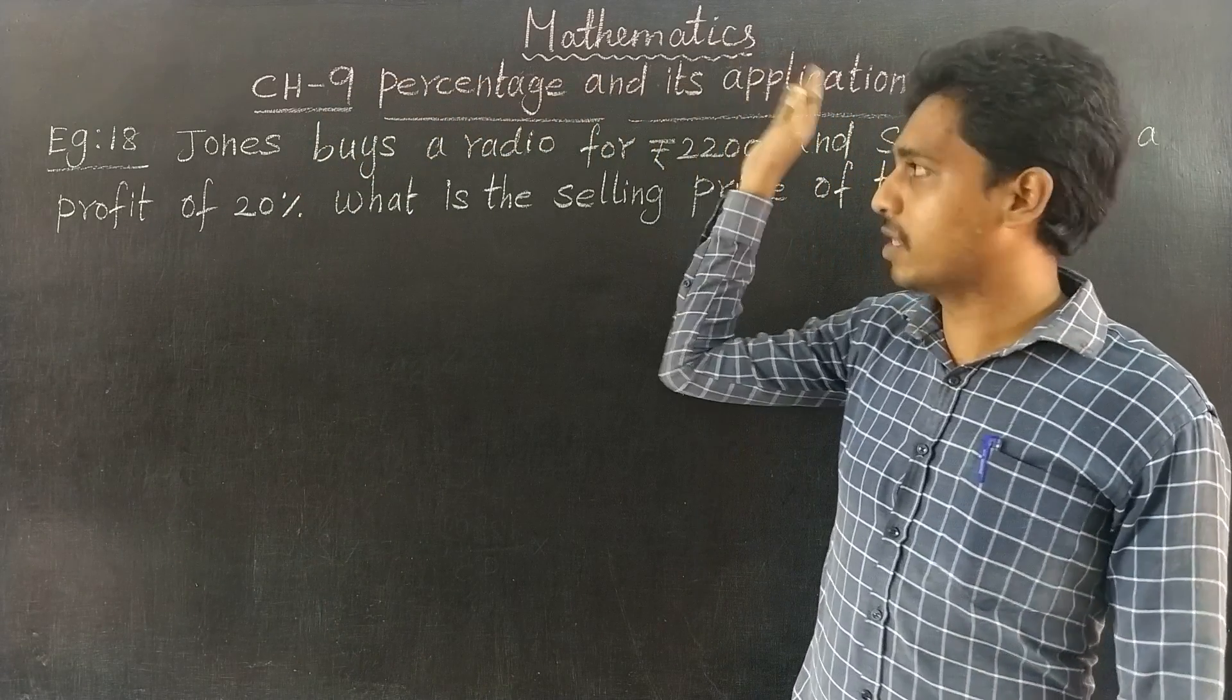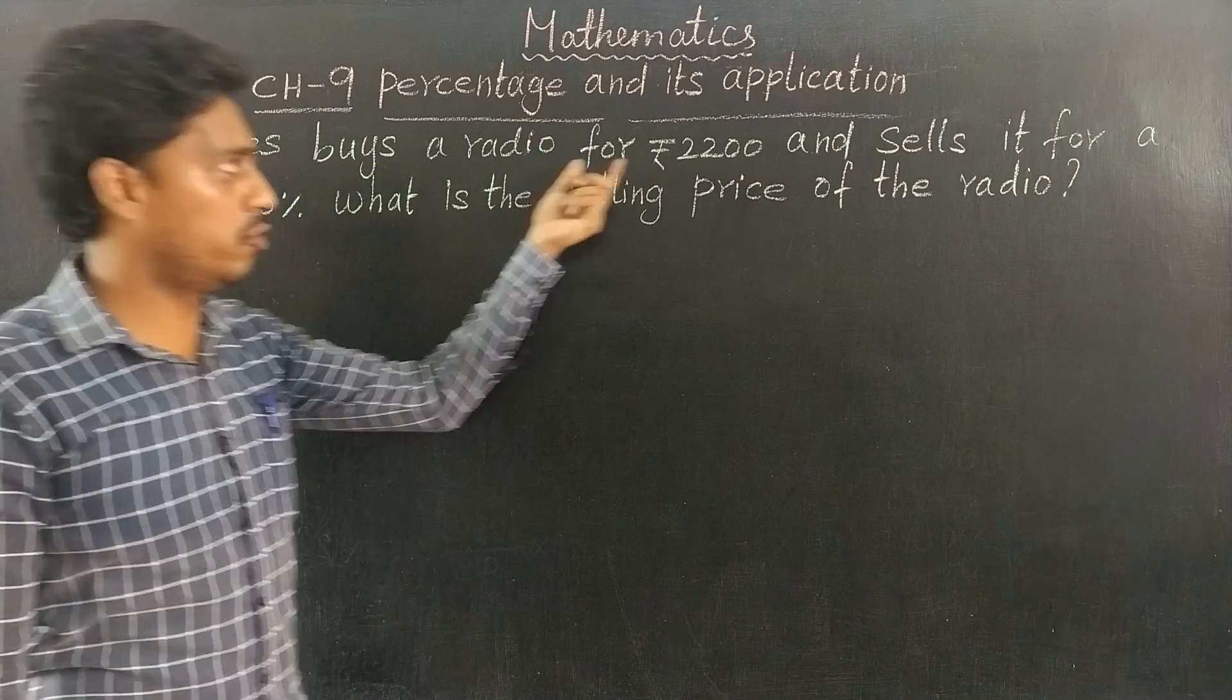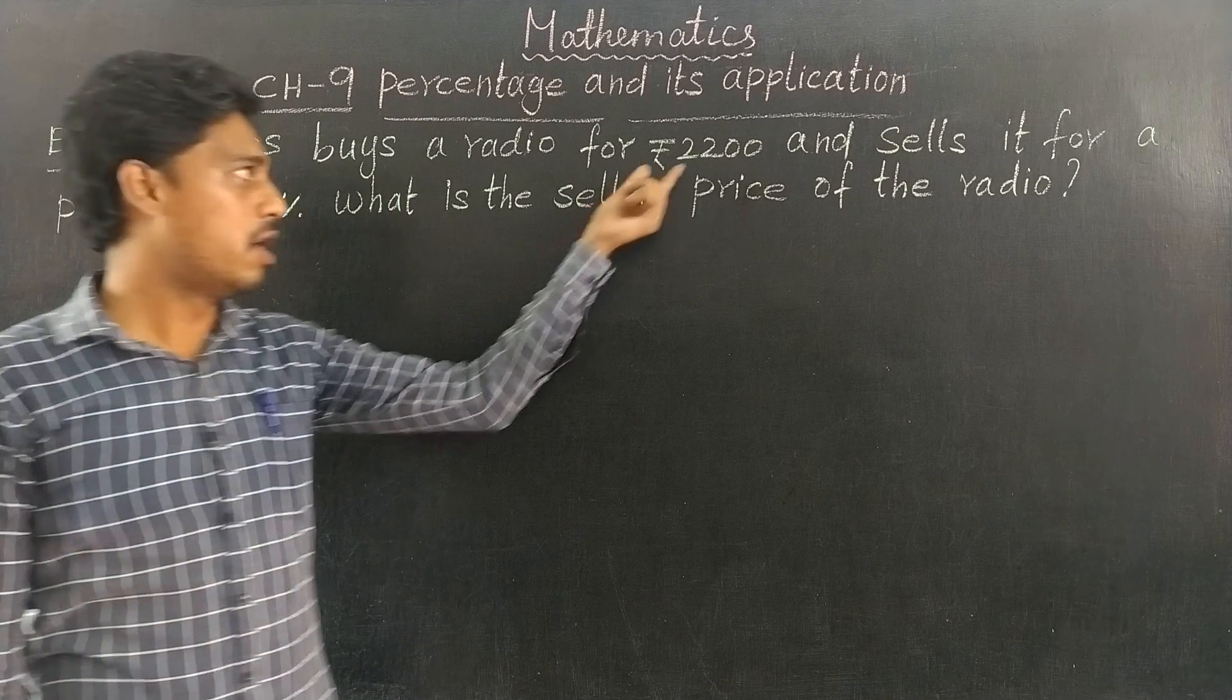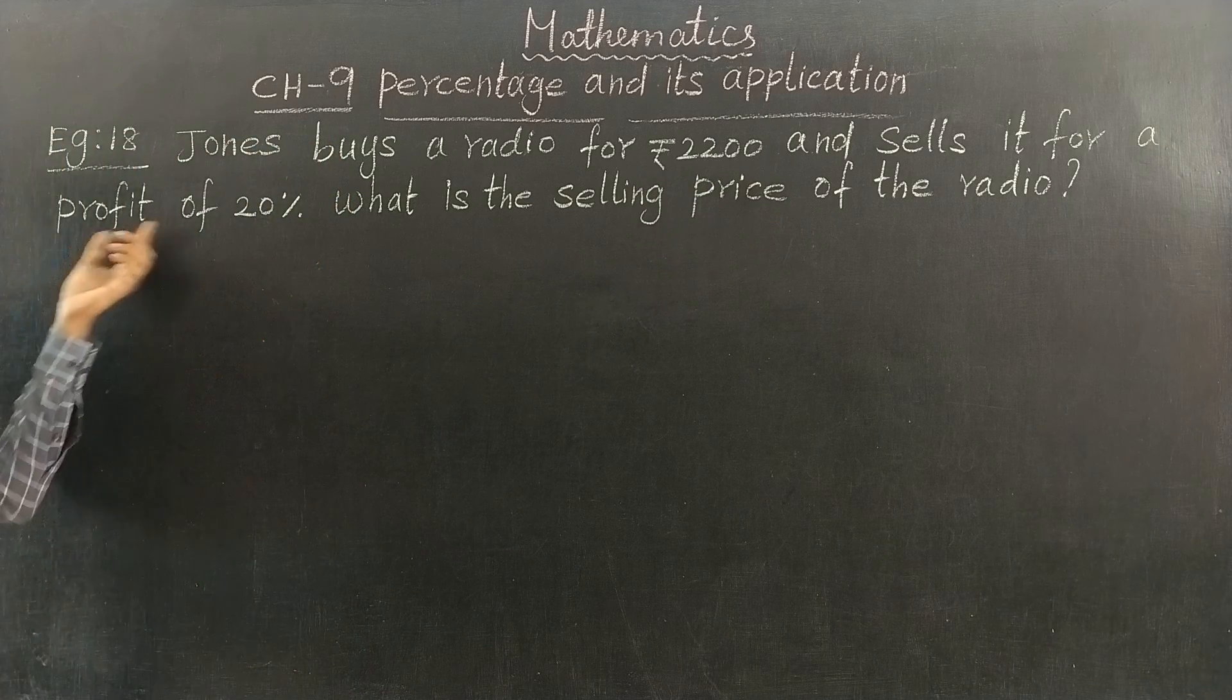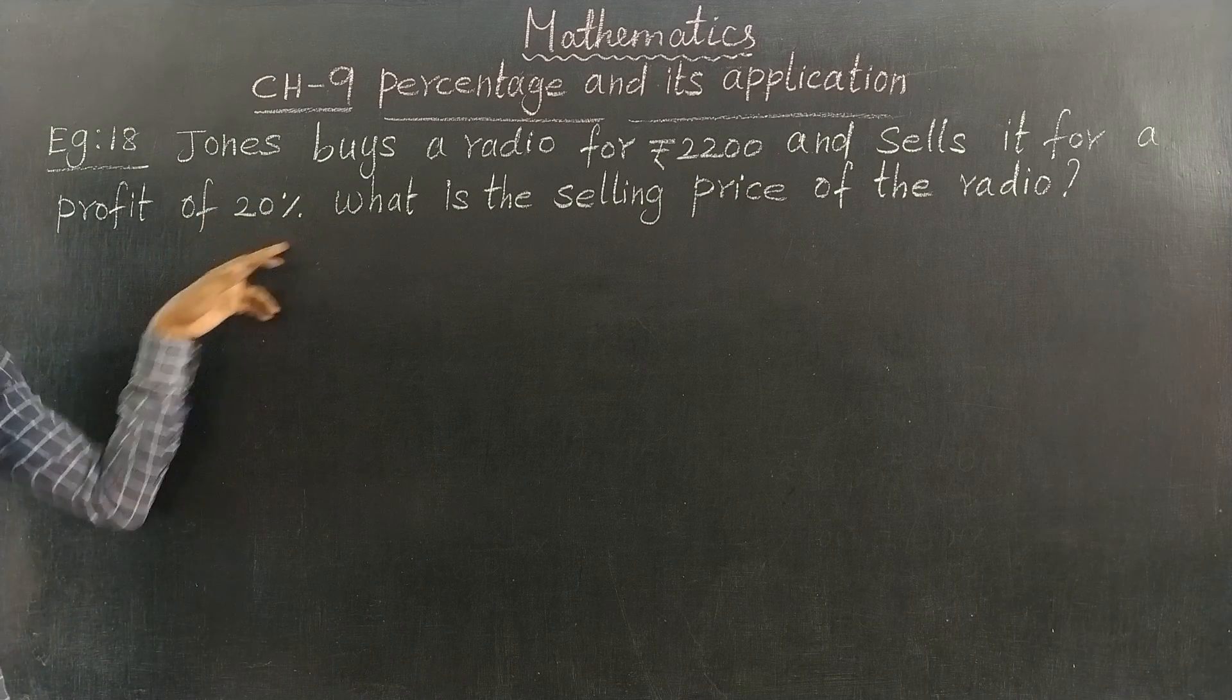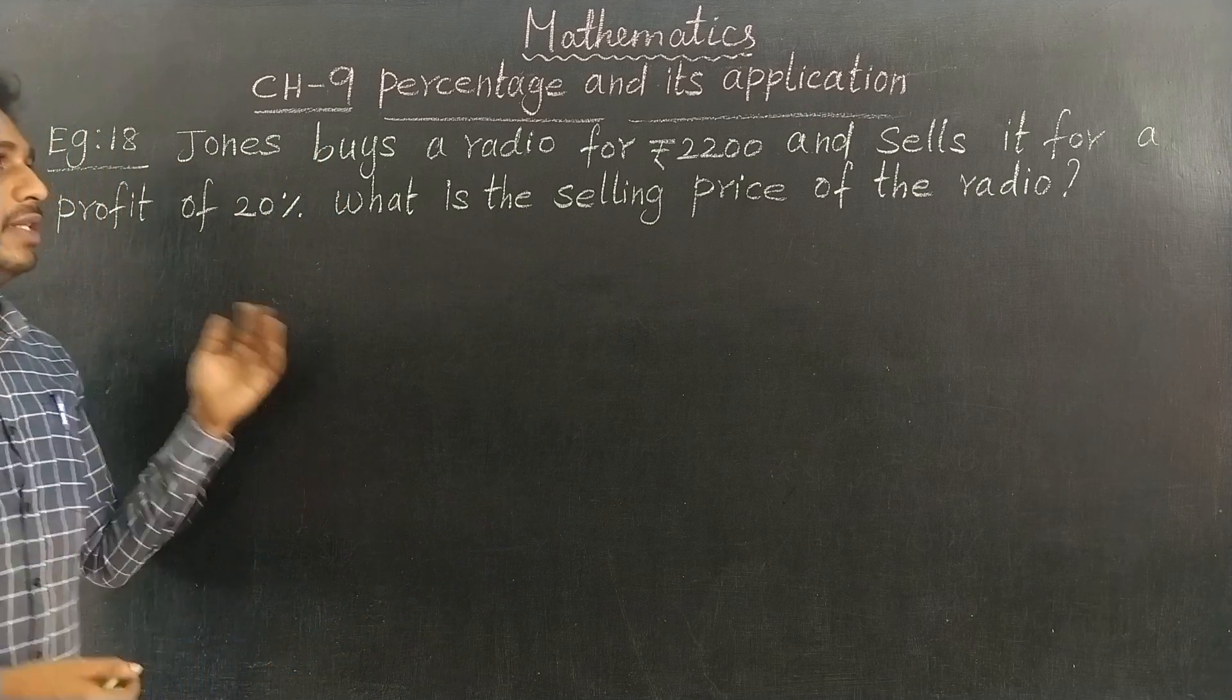Chapter 9, Percentage and its Application, Example 18. Jones buys a radio for Rs. 2200 and sells it for a profit of 20%. What is the selling price?